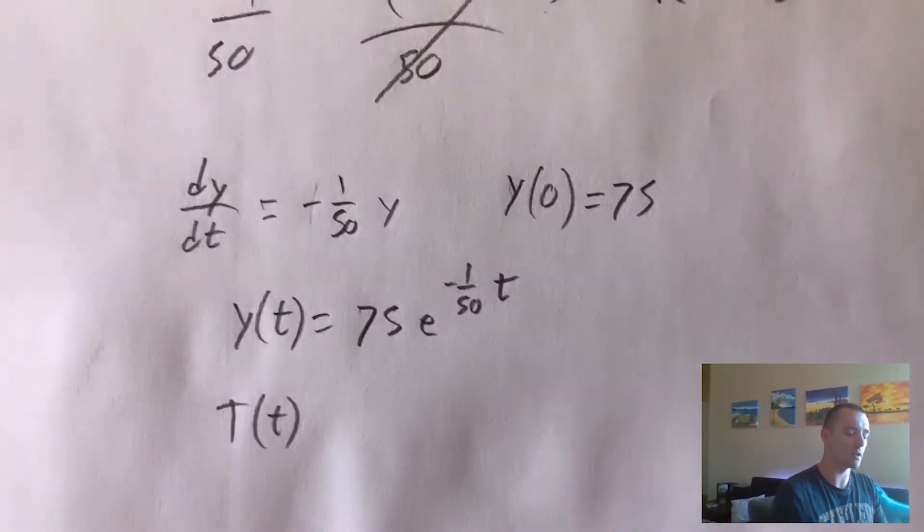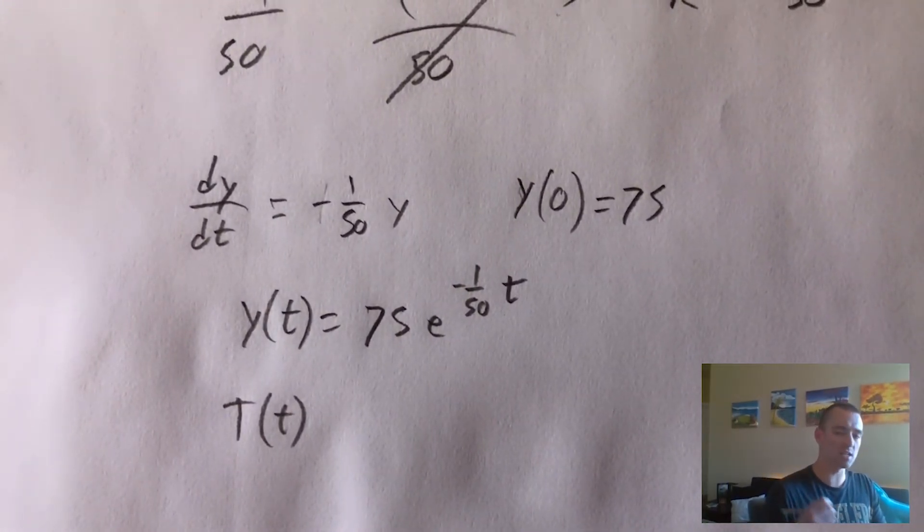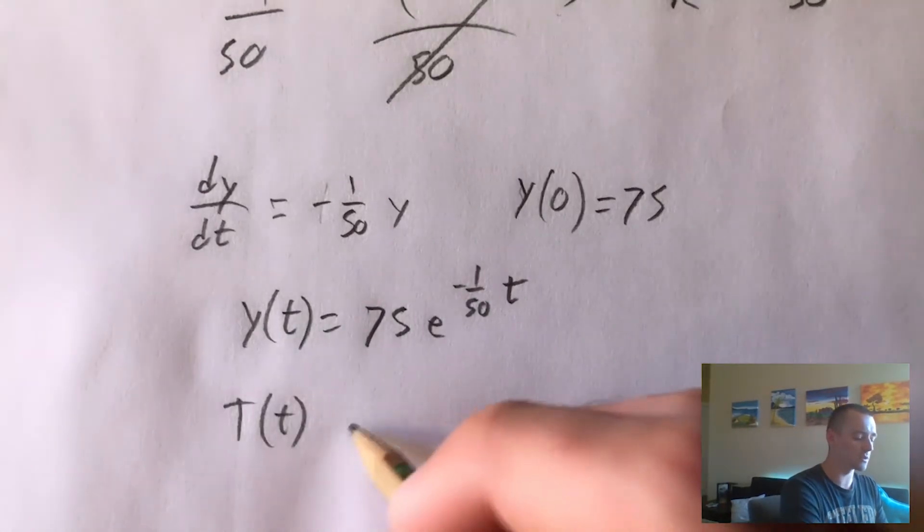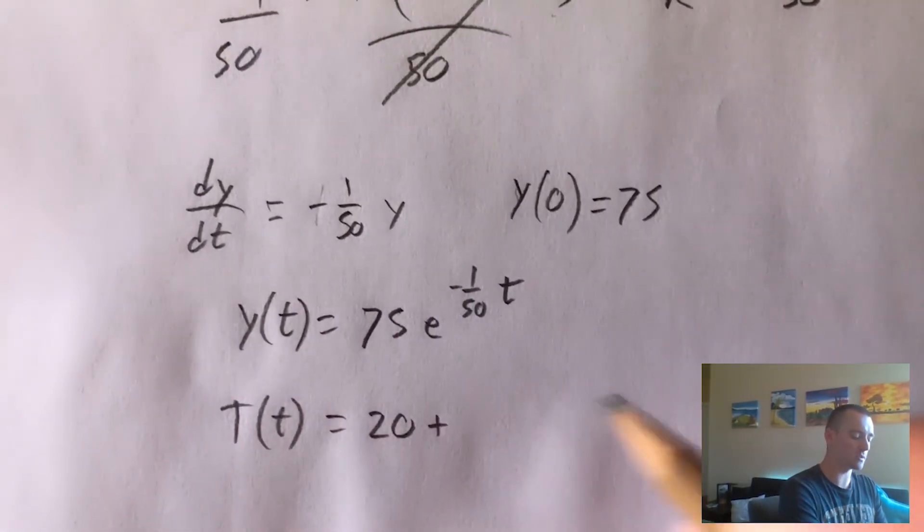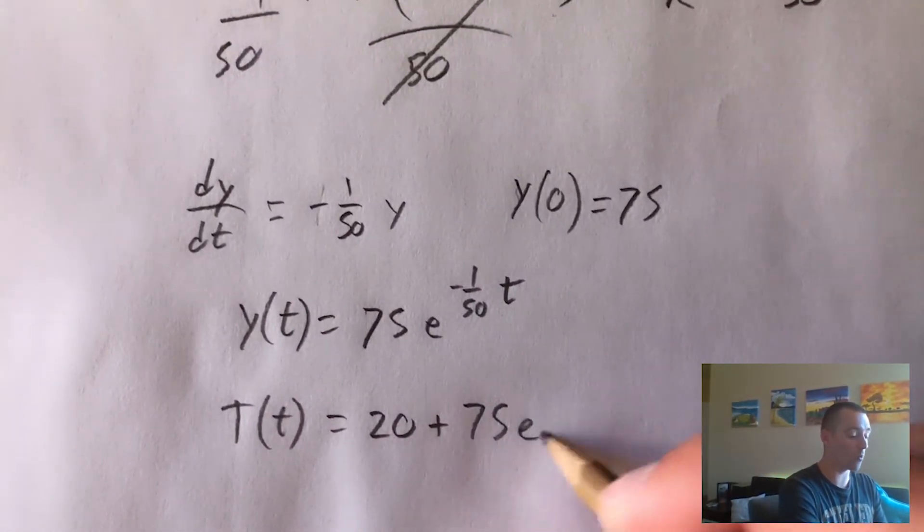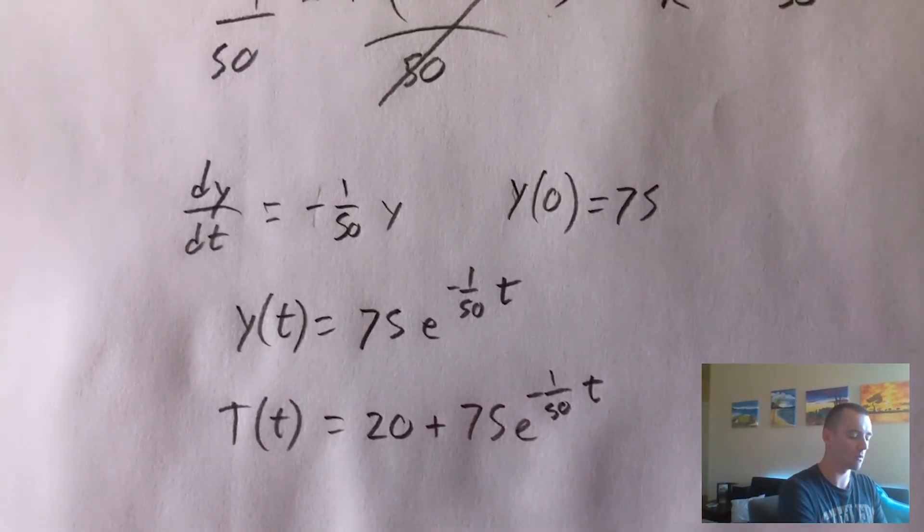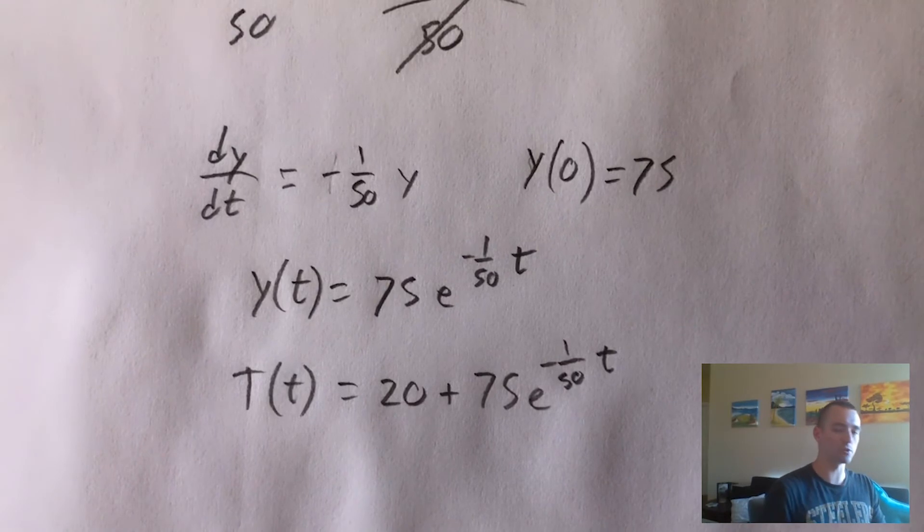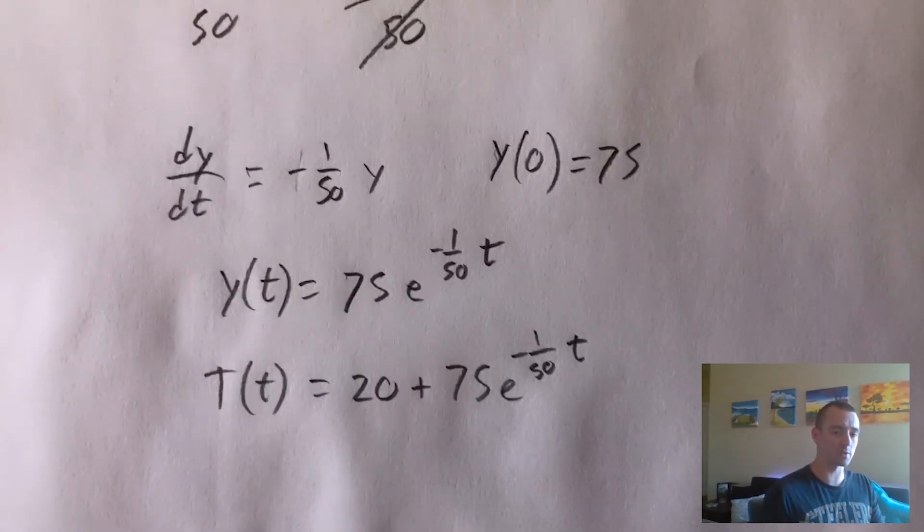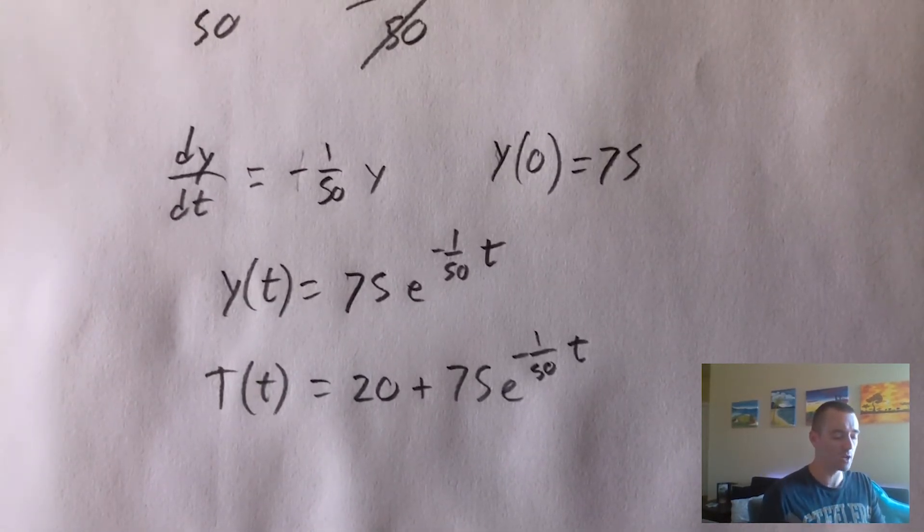So the temperature, however many minutes T minutes after it was brewed, is just going to be 20 plus this equation that we had for the Y value at that same time. So this is our equation that tells us the temperature of our coffee at some time t, t minutes after it was brewed.